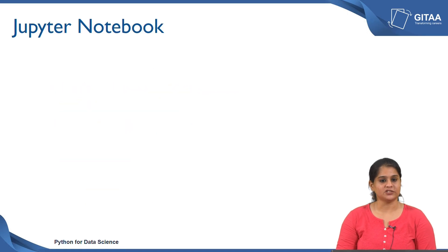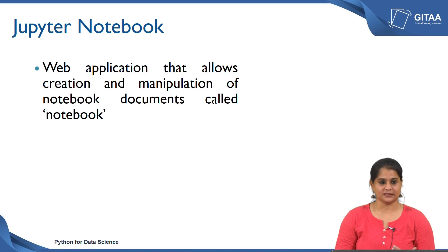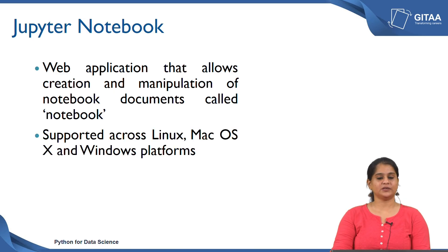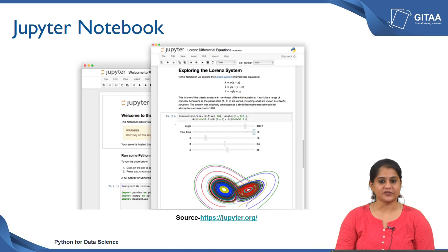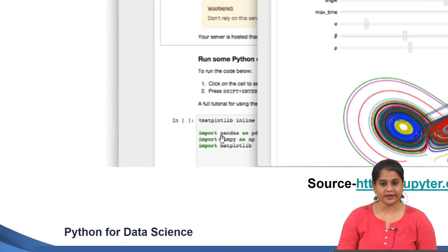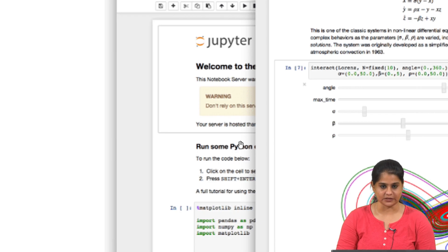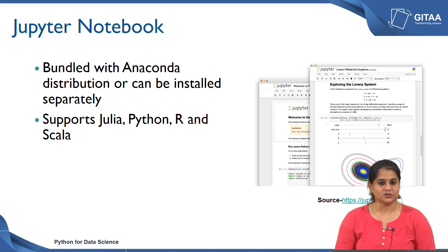Jupyter Notebook is very different from the earlier two IDEs in that it is a web application which allows creation and manipulation of code. These codes are called notebook documents, hence the name Jupyter Notebook. Jupyter is supported across all operating systems and is available as open source. The interface has cells for input and output. Jupyter is bundled with Anaconda distribution but can also be installed separately. It primarily supports Julia, Python, R, and Scala.